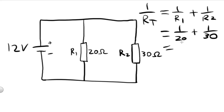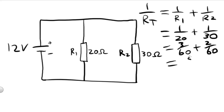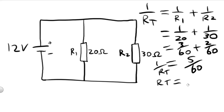Just using some fractional maths here, we'll multiply that first one by 3: 3 over 60 plus 2 over 60. Now we can add those fractions together, so that'll equal 5 over 60. So 1 over RT will equal 5 over 60, and finding the inverse, RT will equal 60 over 5, which equals 12 ohms.